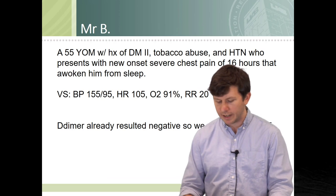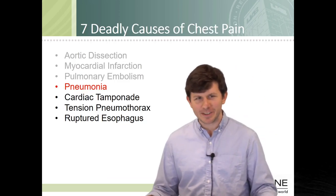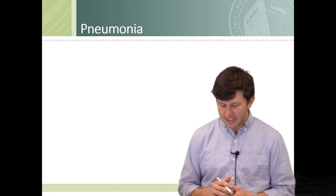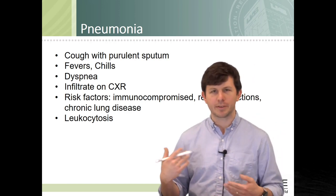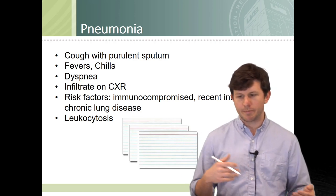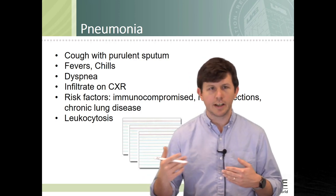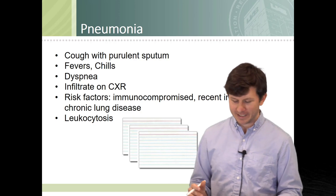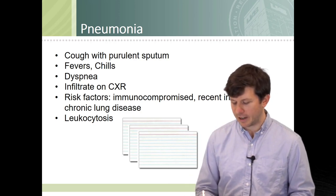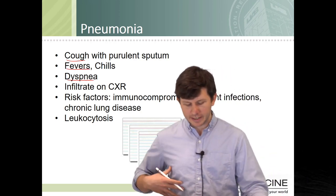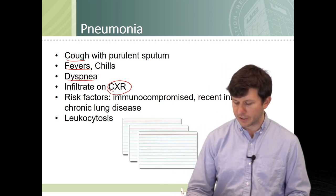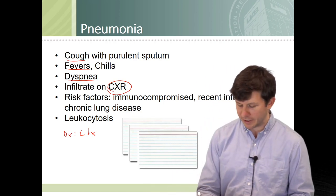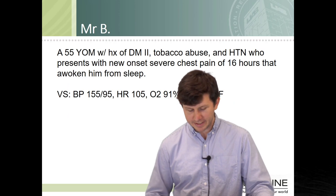Moving down the list — pneumonia. As an infectious disease fellow, we have to talk about pneumonia. What is your illness script? There are actually a lot of cards I could pull out: community-acquired, hospital-acquired, pneumonia from Legionella, Mycobacterium, or fungal species. For your purposes, you think about the common things: cough with purulent sputum, fevers, chills, shortness of breath, and an infiltrate on chest x-ray. But ultimately this is a clinical diagnosis — there is no 100% confirmatory testing. You put these features together, and your chest x-ray report will always say 'correlate clinically.'